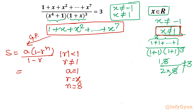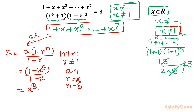Putting in the values with a=1, we get (1 − x⁸)/(1 − x). Now you can see why x cannot be equal to 1 — it was necessary to avoid division by zero. We can also write this equivalently as (x⁸ − 1)/(x − 1), by multiplying numerator and denominator by −1.